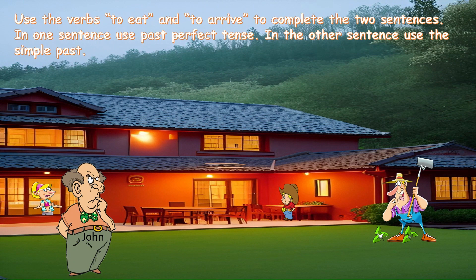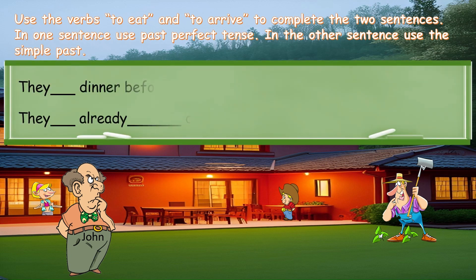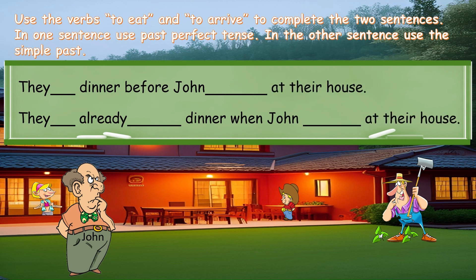Use the verbs 'to eat' and 'to arrive' to complete two sentences. In one sentence use past perfect tense; in the other use the simple past. They ate dinner before John arrived at their house. They had already eaten dinner when John arrived at their house.